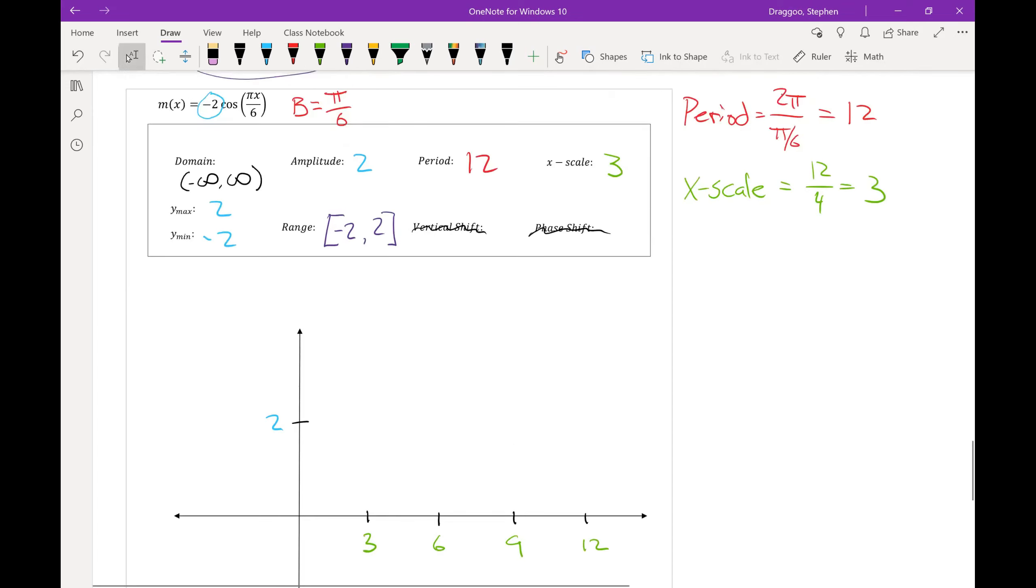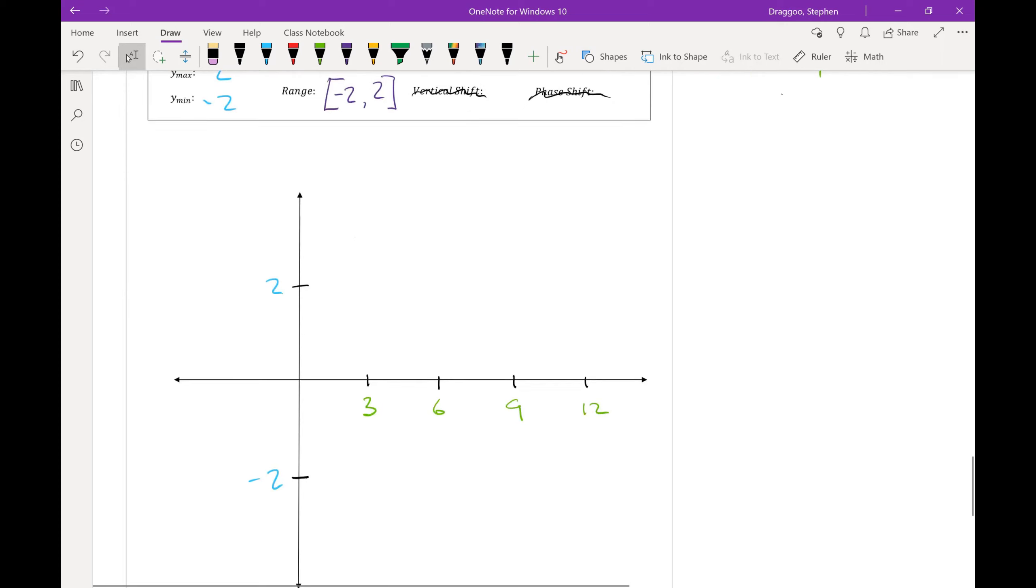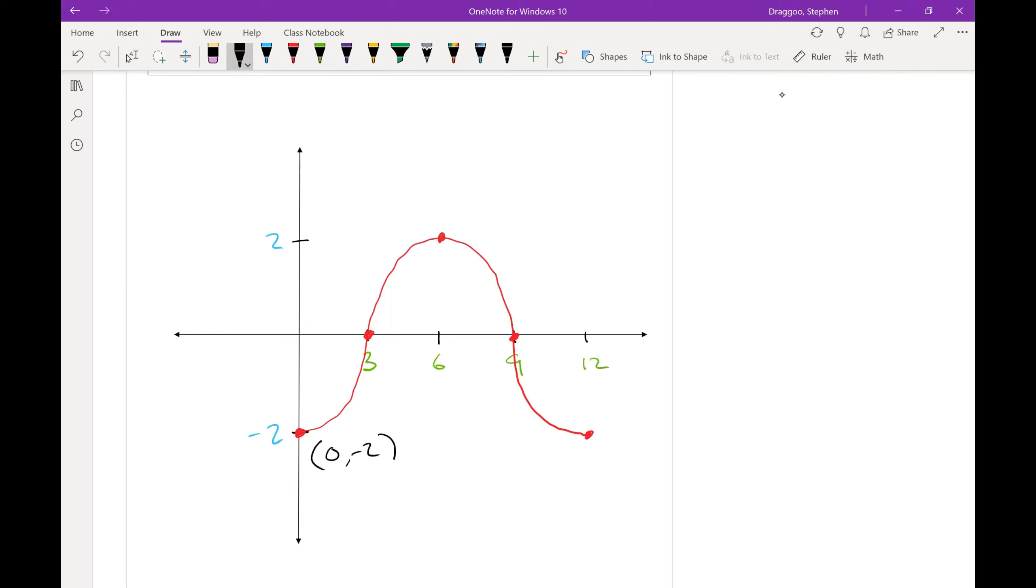Now this is a graph of negative cosine, meaning my graph should start down at its minimum value, and then to the middle, then its maximum, back to its middle, and back to the minimum. And label those five key points.